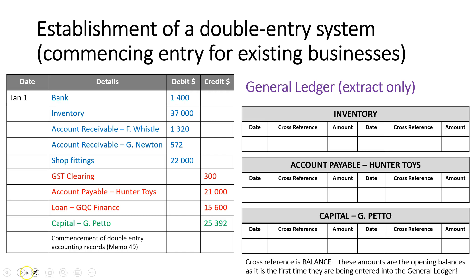Once the general journal is complete, we then need to take that over into the general ledger. I've picked three accounts to show you an extract. In the inventory account, inventory had a balance of $37,000. On January 1st I would enter $37,000, and because I'm opening the general ledger accounts for the first time as we move into the double entry system, I use the term "opening balance" as my cross-reference.